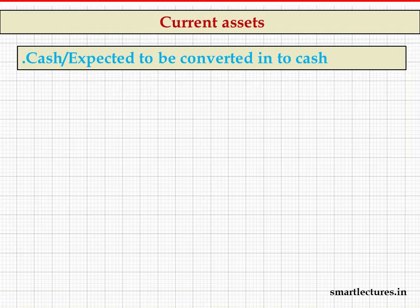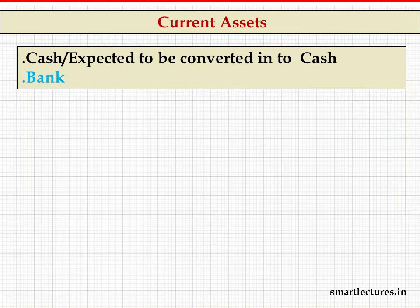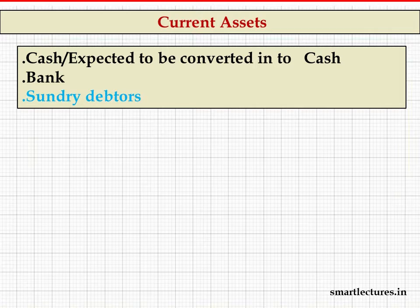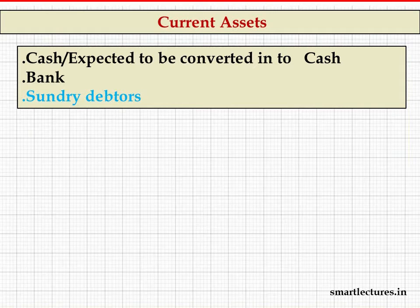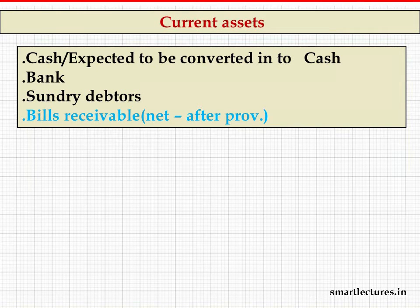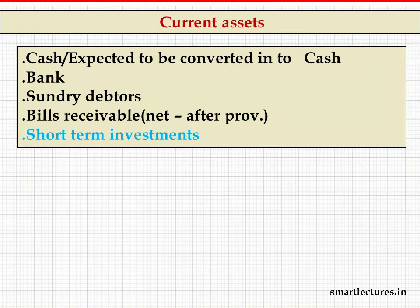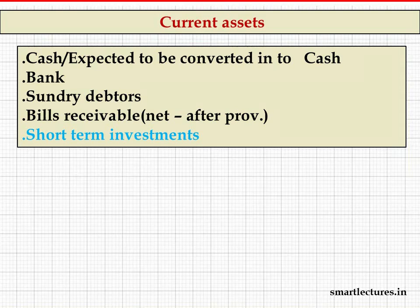Current assets means any asset in the form of cash or expected to be converted into cash within one year. Cash itself is the most liquid current asset. Bank balance is treated just like cash. Sundry debtors — customers to whom we sold goods on credit — are expected to pay within one or two months. Bills receivable are to be encashed within one year. Short-term investments are funds invested for a short period, convertible into cash within one year.